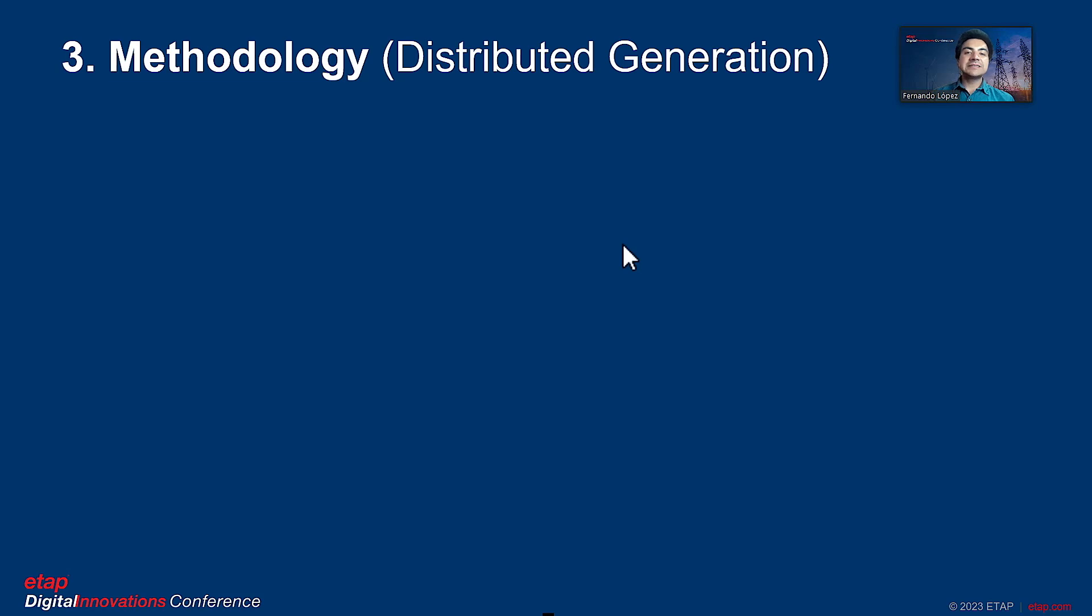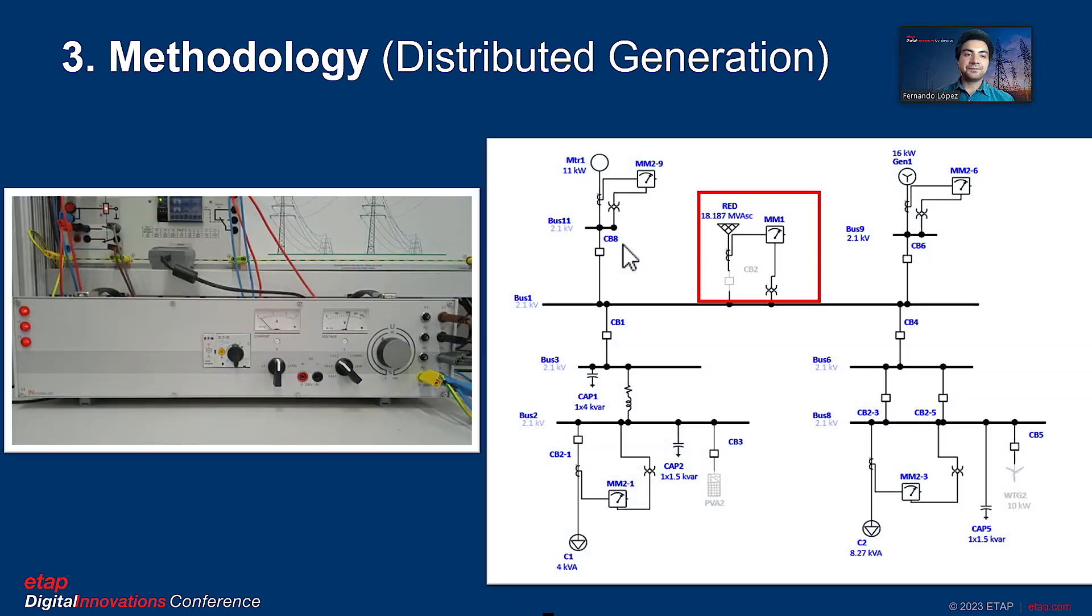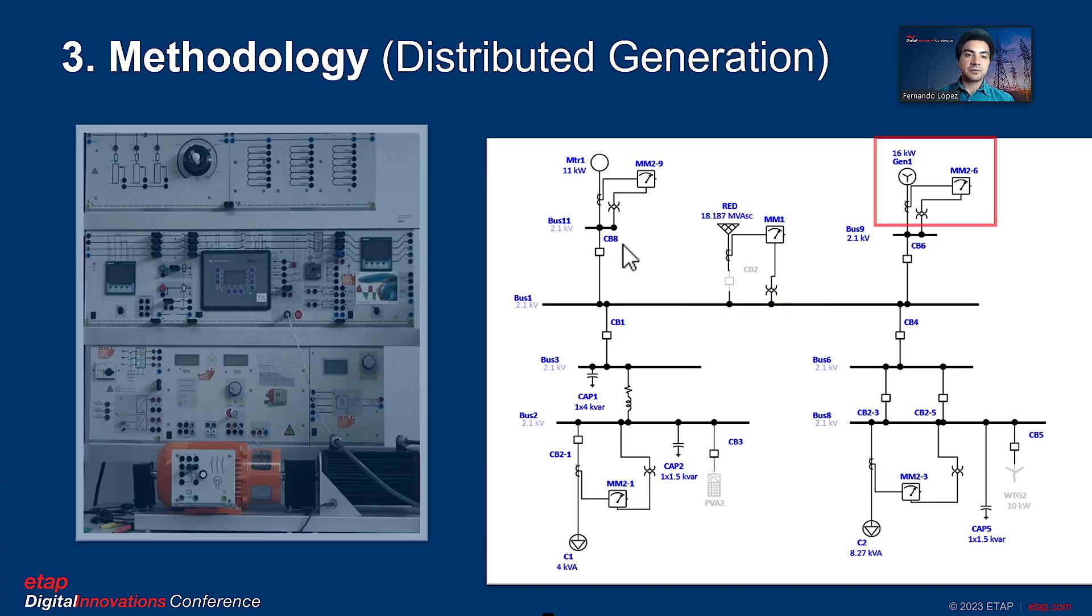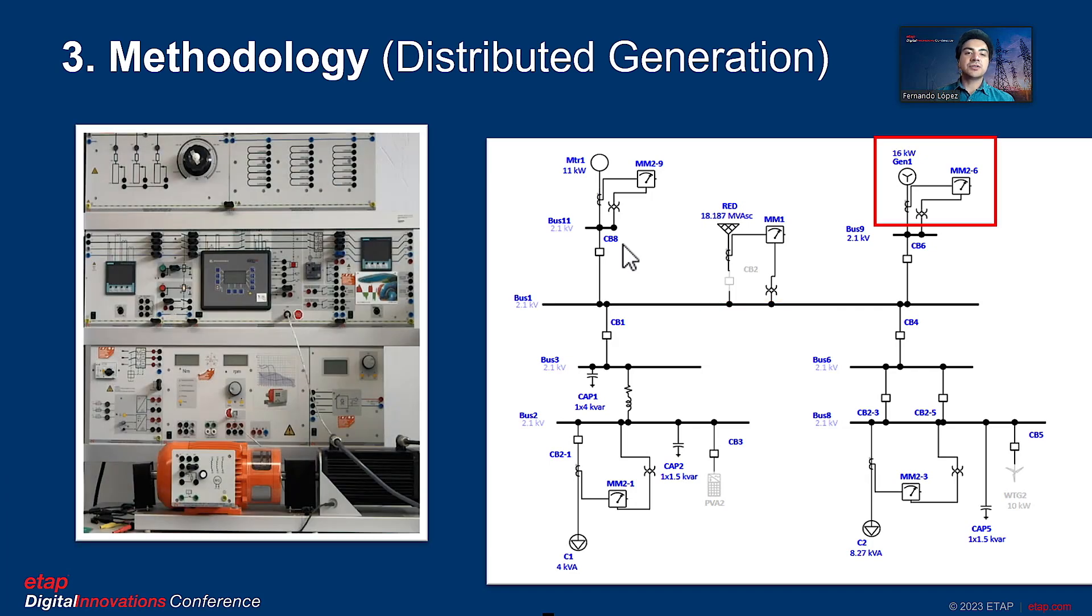The distributed generation system includes the following. The electrical network is represented by the three-phase source. The generator, Gen1, represents the reversible hydroelectric power plant module of the LucasNeo modules.